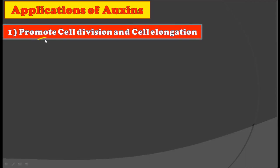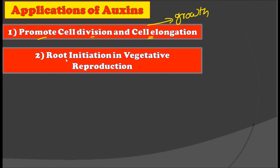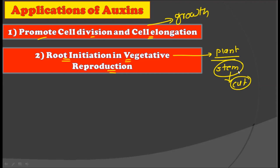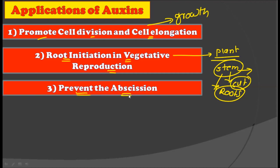Now let us see the applications of auxins. First, auxins promote cell division and cell elongation in plants, which form very important steps of growth. Second, auxins play a role in root initiation during vegetative reproduction — if you apply auxin to the cut part of a stem used for vegetative propagation, the stem will grow rapidly and form roots.